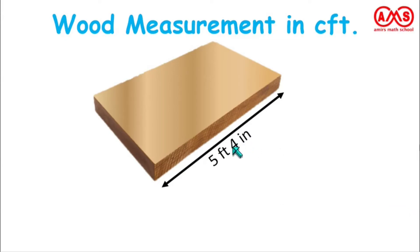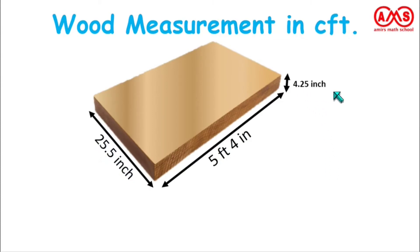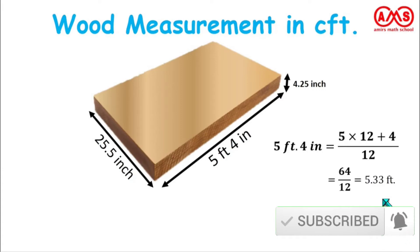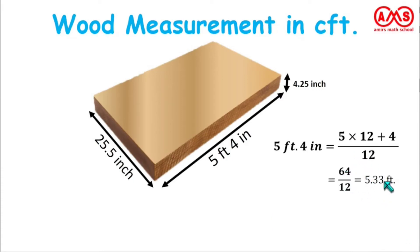Now let us see another measurement where the length is 5 feet 4 inches, the breadth is 25.5 inches, and the thickness is 4.25 inches. In this case we must first convert the length into feet. 5 feet 4 inches equals 5 times 12 plus 4, divided by 12 — because 12 inches equals 1 foot. That gives 64 divided by 12, which equals approximately 5.33 feet.